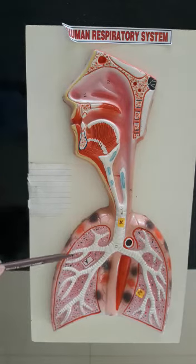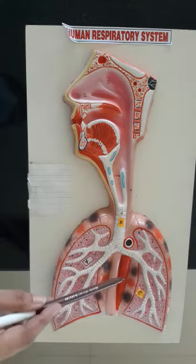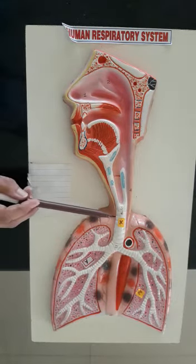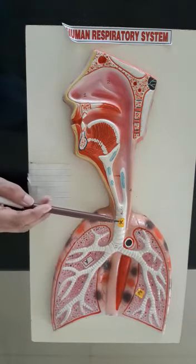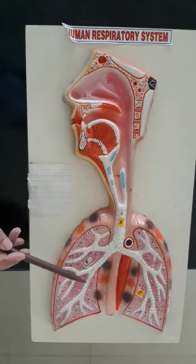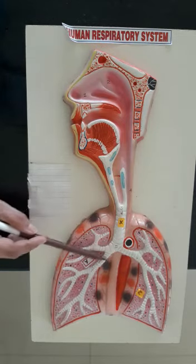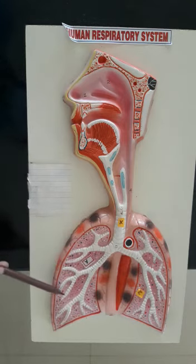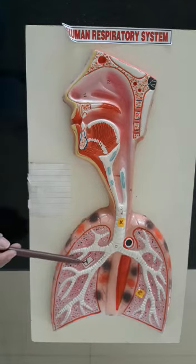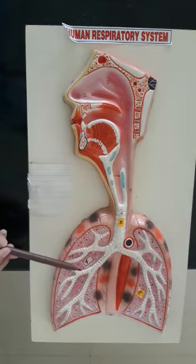Once the bronchus enters into the lung, it divides into smaller branches called bronchioles. Each bronchiole opens into air sacs called alveoli, which are in the lungs. For your practical, you have to study only three parts: X, Y and Z. X is the trachea, which carries the air to the lungs. The trachea bifurcates into two branches called bronchi, and these bronchi further divide into smaller branches called bronchioles. Y is the lungs — this is the right lung and this is the left lung.